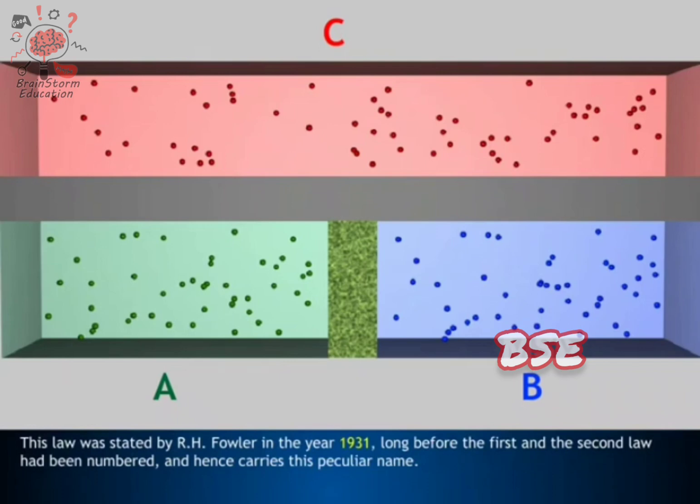This law was stated by R.H. Fowler in the year 1931, long after the 1st and 2nd Law had been numbered, and thus carries this peculiar name.